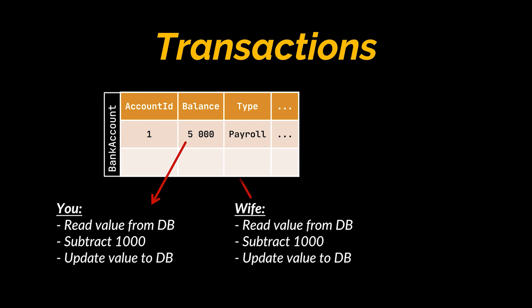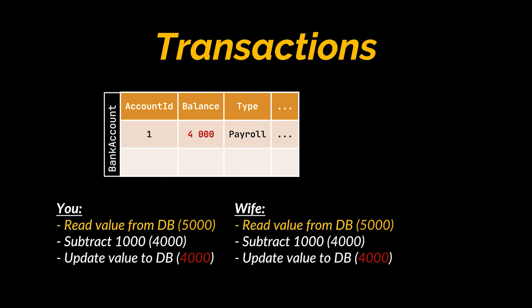That is one thousand for each of you, and then update the table with the value three thousand. But what if the reading operations were done at the same time? You will both be updating the table with the value four thousand instead of three thousand, because you each withdrew a thousand dollars.